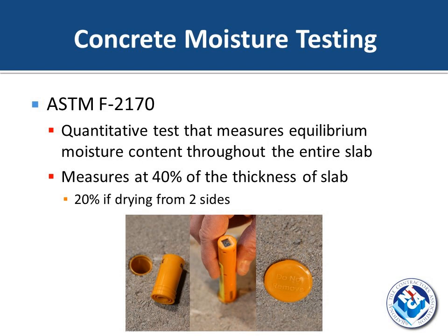So we've described the problems — how do you know if you have one? The first test method is ASTM F2170, commonly referred to as the in-situ probe test. This is a quantitative test — you get a number, in this case a percent relative humidity or percent RH. That tells you the equilibrium moisture content throughout the entire slab. To do this, you drill in about 40% of the thickness of the slab.